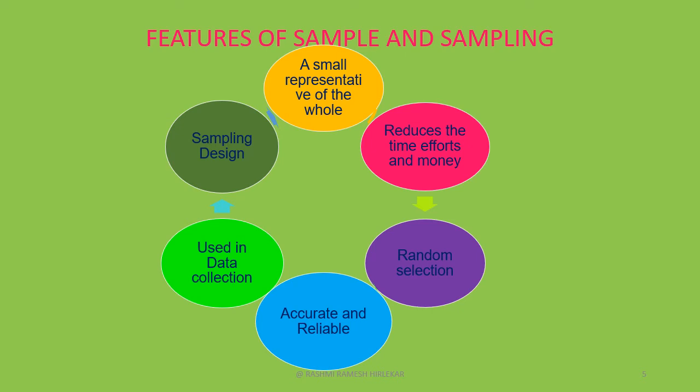The fifth feature is use in data collection. Sampling is used in data collection as well as for different purposes in our daily life. The sixth feature is sampling design. Sampling design is a plan designed to select the appropriate sample so as to collect the right data for drawing conclusions.